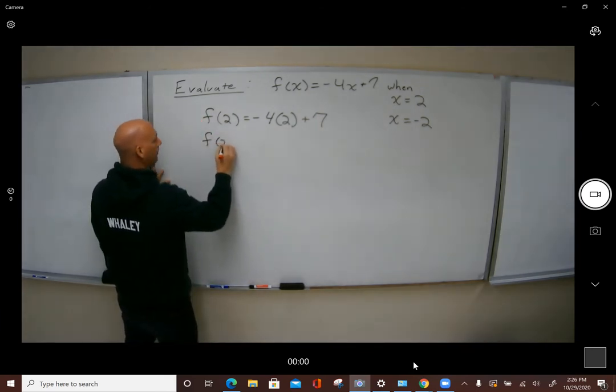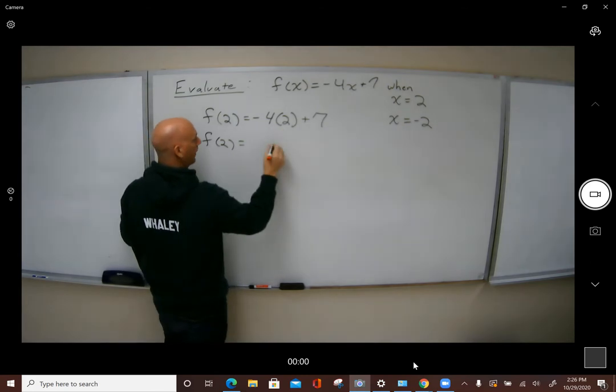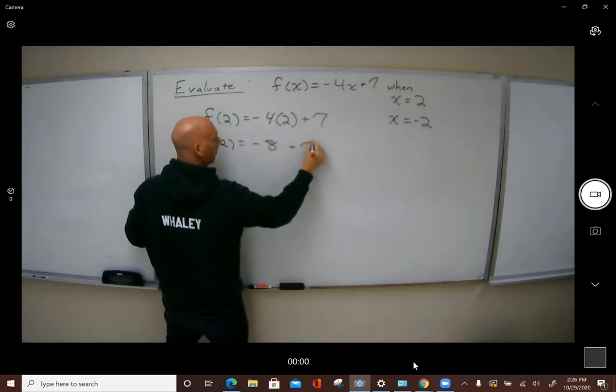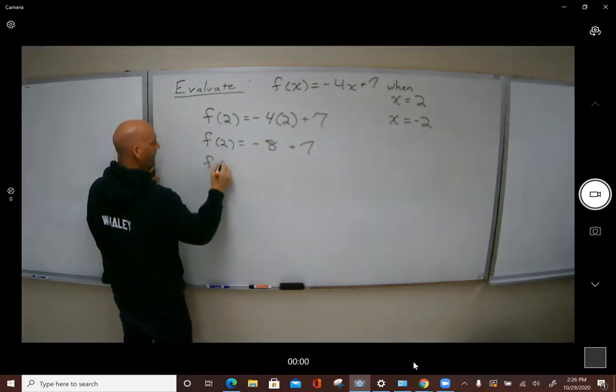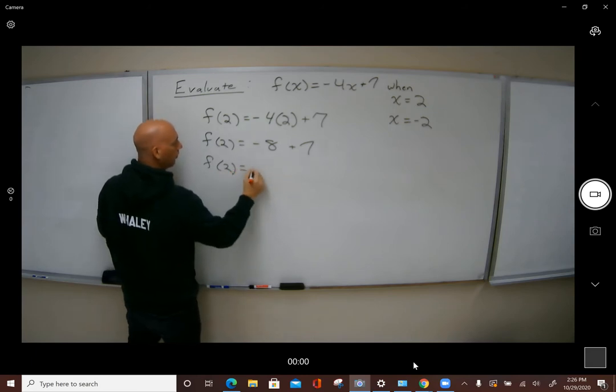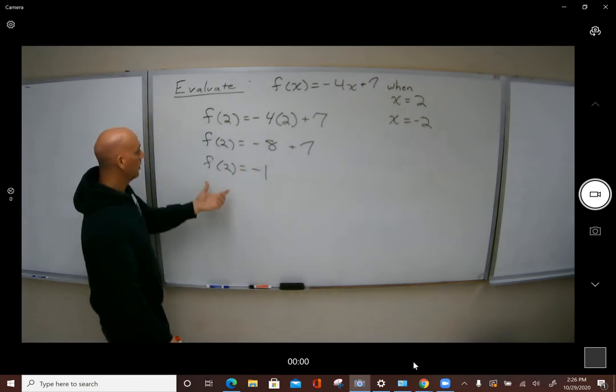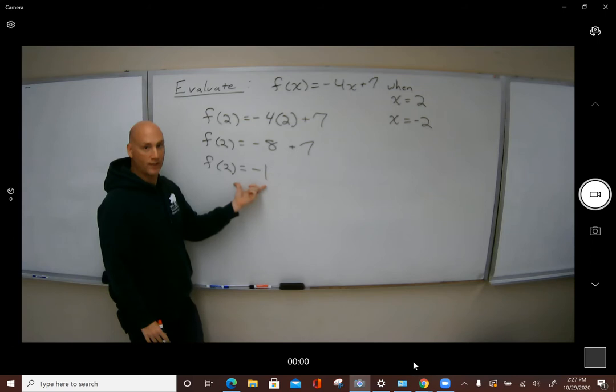So f of 2 would equal negative 4 times 2, which is negative 8 plus 7. F of 2 would equal negative 1. You're used to writing this as a point or as a table: 2 comma negative 1.